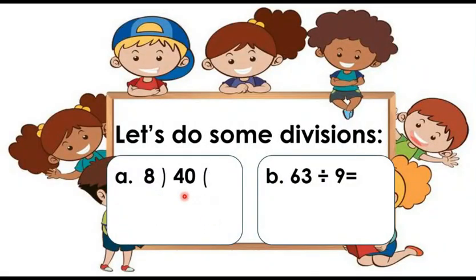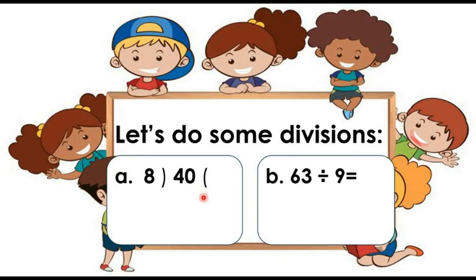Let's solve these two division problems. I have shown you two ways of divisions. Number A is vertical way and number B is horizontal way. Let's solve number A. Here, 40 is divided by 8. To find out the result, we have to read the multiplication table of 8. So, how many times does 8 go in 40? Yes, we know 8 fives are 40, so 8 goes 5 times in 40.